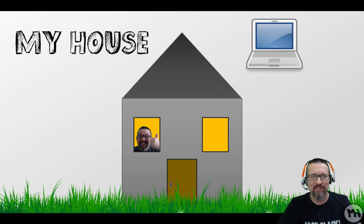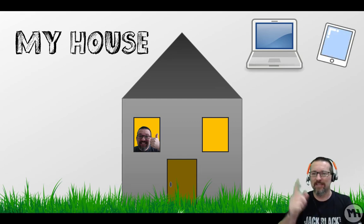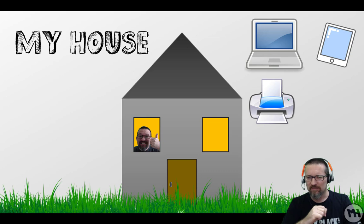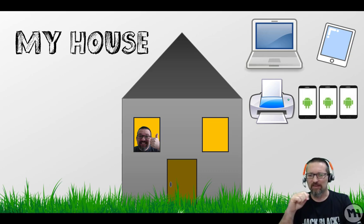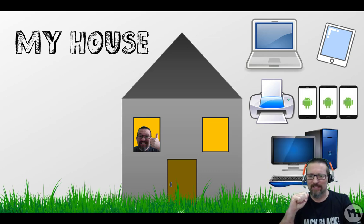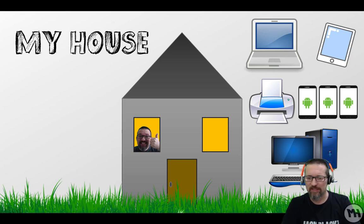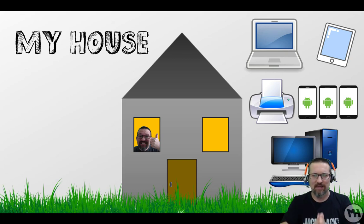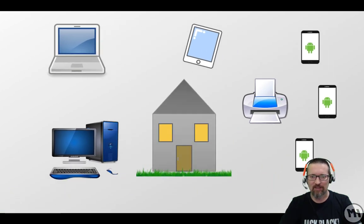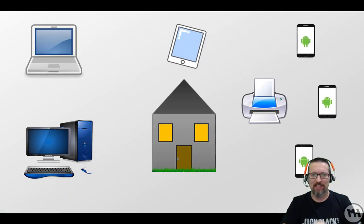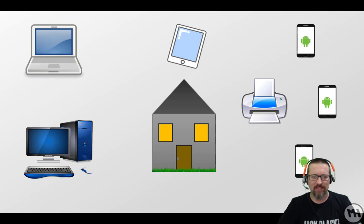In my house I have the following devices: I have a laptop, a tablet, a printer, a couple of cell phones, and of course a desktop workstation — a desktop PC. These are all the different devices I have in my house, and all of these things get used by different people throughout the day, every day.